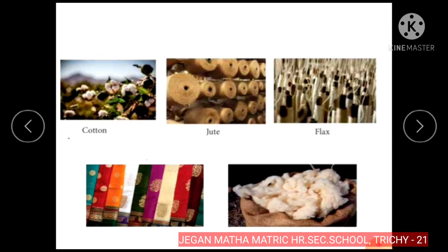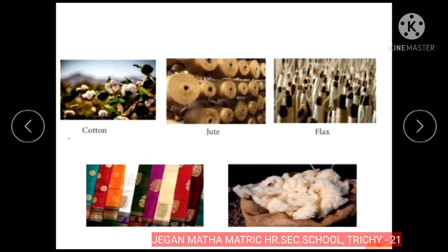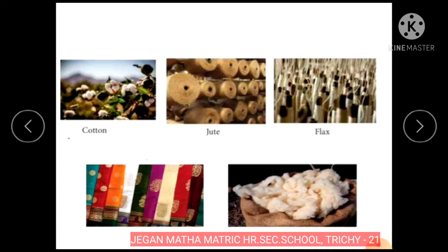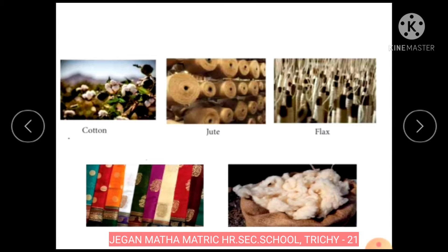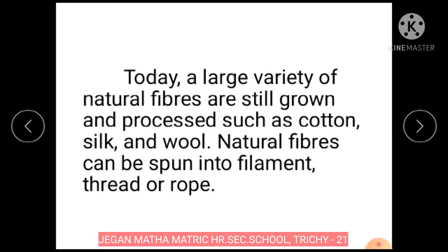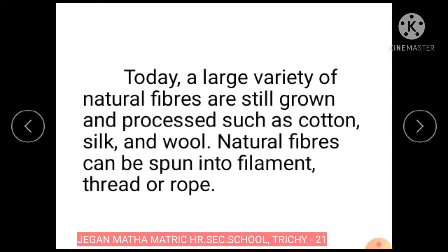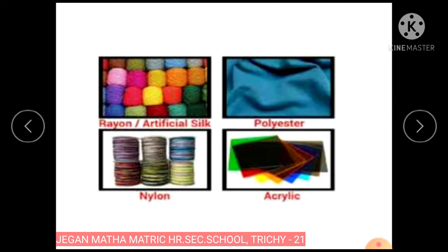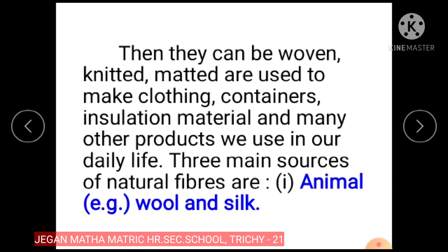Natural fibers can be spun into filament, thread or rope. Then they can be woven, knitted, matted or used to make clothing, containers, insulation materials and many other products we use in our daily life. Three main sources of natural fibers are animal, wool and silk.